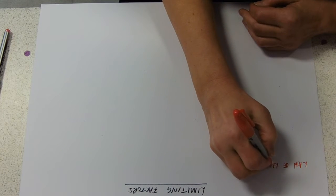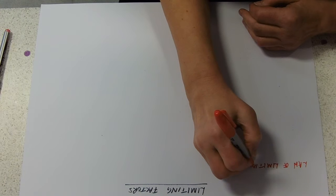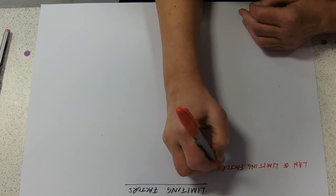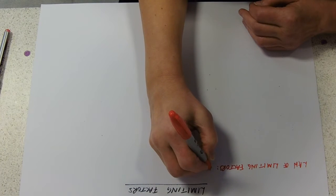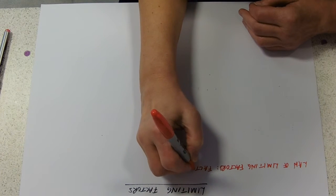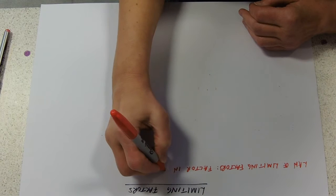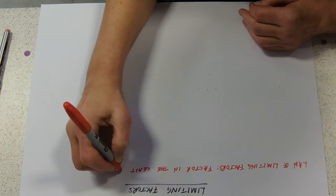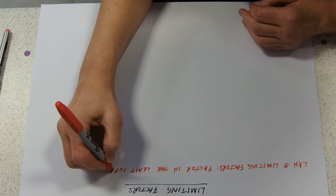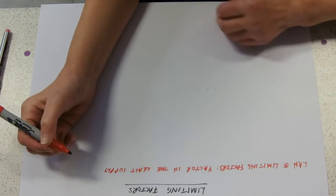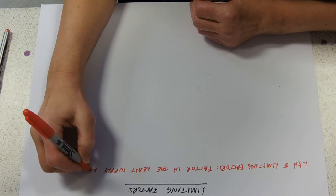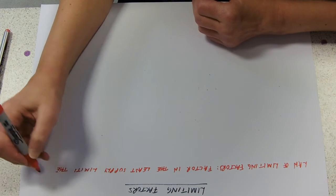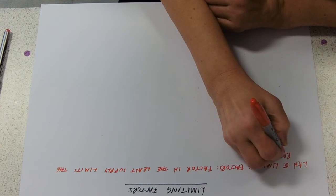The law of limiting factors states that the factor in the least supply limits the rate of photosynthesis.